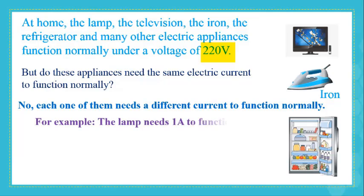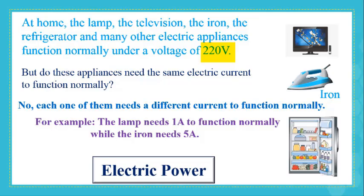For example, the lamp needs 1 ampere to function normally, while the iron needs 5 amperes. The difference in the electric consumption of electric devices is related to a physical value called electric power. What do we mean by electric power? What factors affect electric power? How do we calculate electric power? All of these questions will be answered throughout this session.